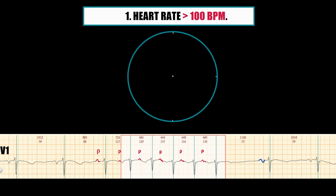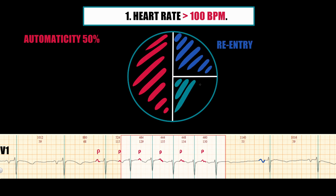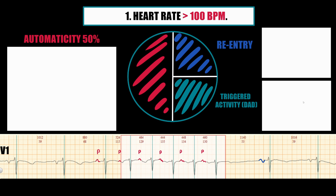The arrhythmogenic mechanisms involved in atrial tachycardia formation are as follows. Approximately half of all cases of focal atrial tachycardia are caused by abnormal automaticity. The remaining cases are caused by re-entry and triggered activity, especially delayed afterdepolarization. Atrial tachycardia due to abnormal automaticity is not initiated by a premature impulse early in the cardiac cycle. The first complex of tachycardia occurs later in the cardiac cycle, which is a general characteristic of an automatic mechanism, because spontaneous diastolic depolarization current needs time to reach the threshold and initiate an impulse.